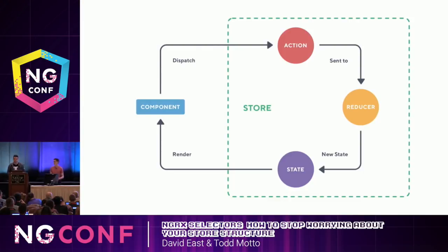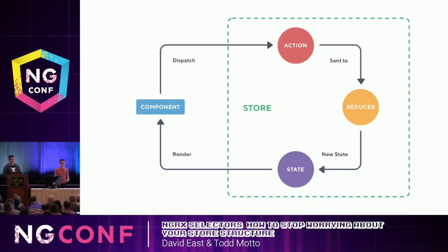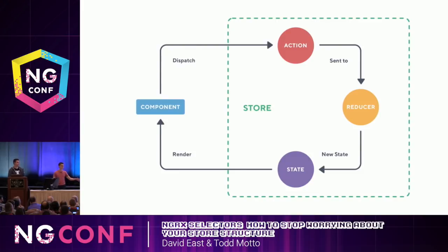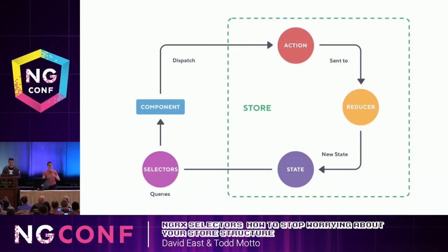So we went back to the drawing board and checked out this diagram — the lovely diagram that took ages to do. My expectation was I can just dispatch something, put it in my store, and get new state back. But the problem is if you only use those three tools — your actions, your reducer, and your state — you're going to run into the same problems we did. Todd and I realized we had to redo this diagram, rethink the approach, and Todd stayed up all last night doing this new diagram. Big change.